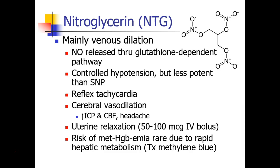Patients can get headache from this treatment. Nitroglycerin can also be used in the OB setting for uterine relaxation. This may be necessary if there are retained products of conception — a piece of placenta or something like that — that needs to be removed. The obstetrician may ask us to give nitroglycerin to relax the uterus so they can extract the remaining products of conception.